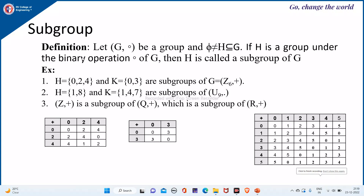We will be seeing subgroups today. Let G with composition be a group and H a non-empty subset of G. If H is a group under the binary operation of G, then H is called a subgroup of G. This means H is a non-empty subset of G that satisfies all the properties of a group under the same operation of G.